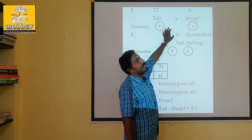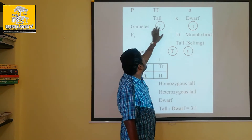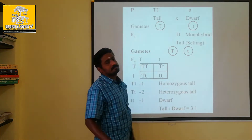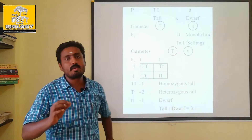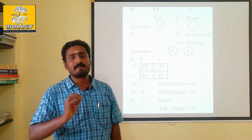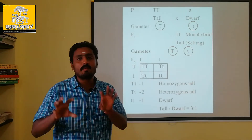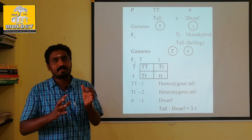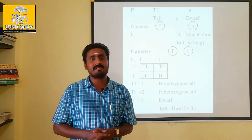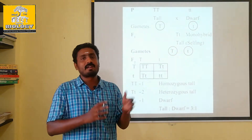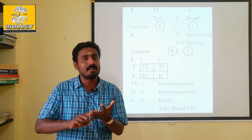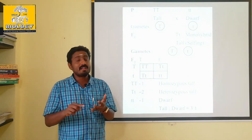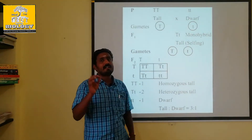Now if you produce the two gametes, one factor and one factor — that is, the factors are paired, separate, and segregate. This is the law of segregation.